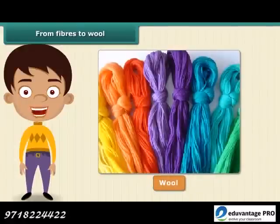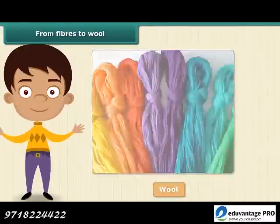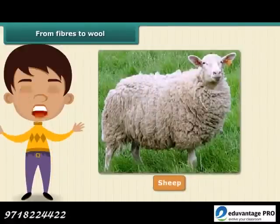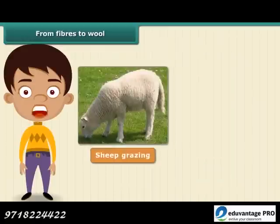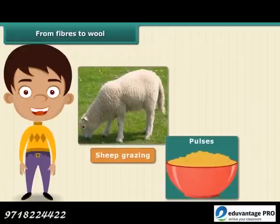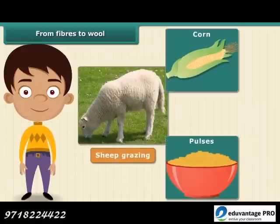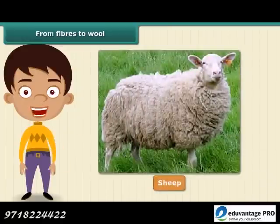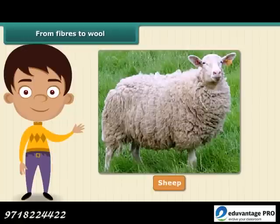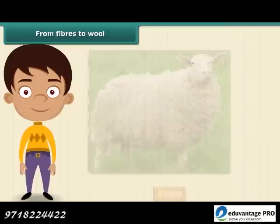For the wool to be of good quality, sheep need to be fed a nutritious diet. Apart from what they get from grazing, they are fed a mixture of pulses, corn, and jowar. The sheep so reared develop a thick growth of hair, known as the fleece of the sheep, which provides us wool.